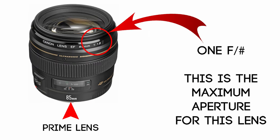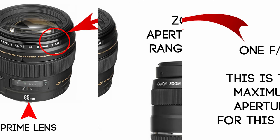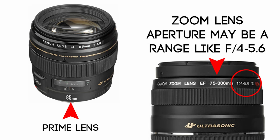If the camera lens is a prime lens — meaning it has one set focal length, like 85mm, and no zoom — there will be just one F number on the lens. That is the maximum or widest aperture the lens is capable of using. If the camera is a zoom and has a range of focal lengths like 18-55mm, then it usually also has a range of apertures, such as F4 to F5.6.